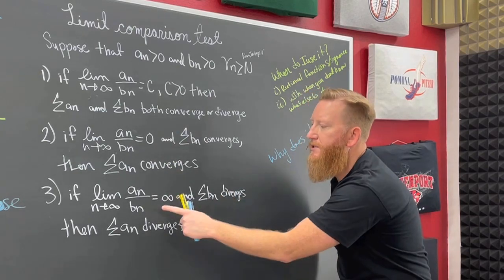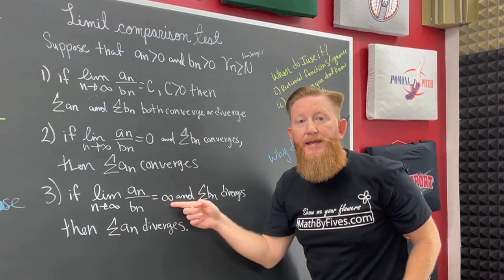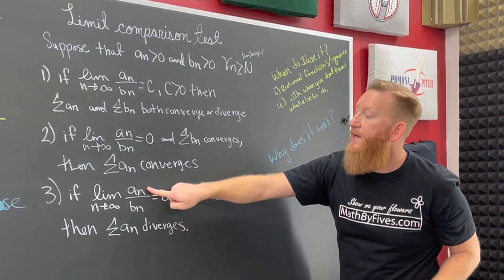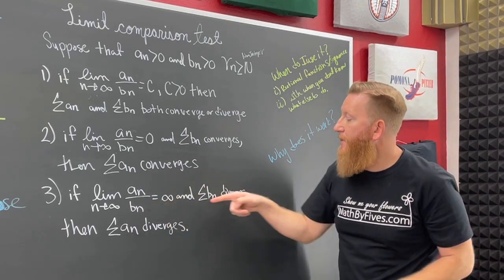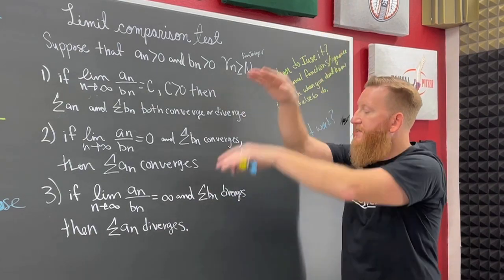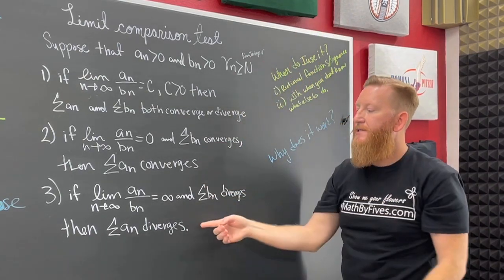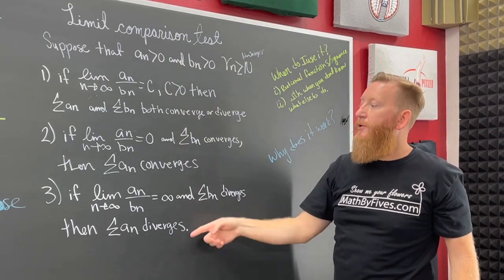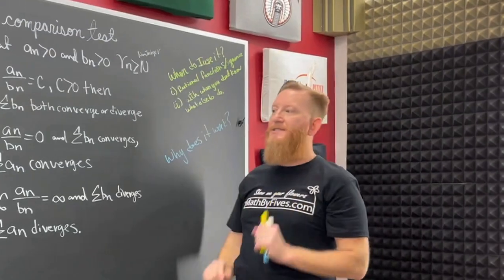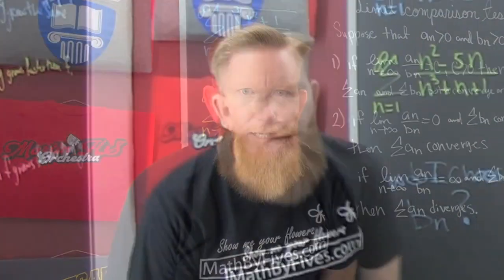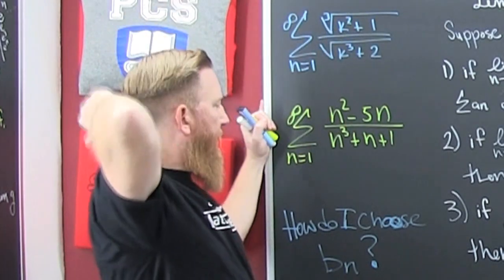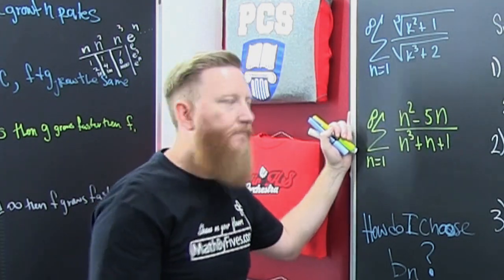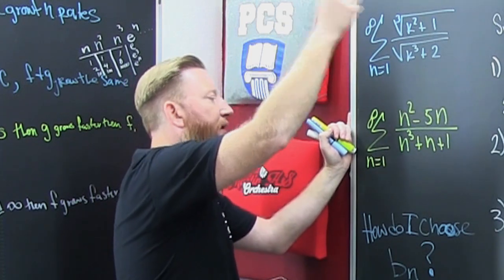The other special case is when you run the limit of the quotient and it goes to infinity. This time a_n is bigger because the limit goes to infinity — b_n is the sub. If b_n diverges, then the series of a_n also diverges. So this is the limit comparison test to see whether or not they grow the same. If they don't grow the same, these two special cases apply with the direct comparison test.